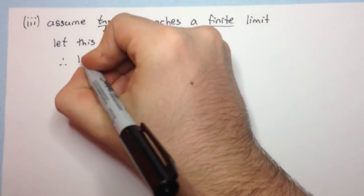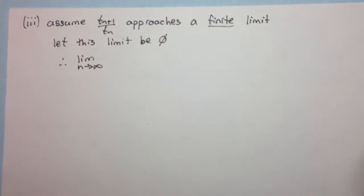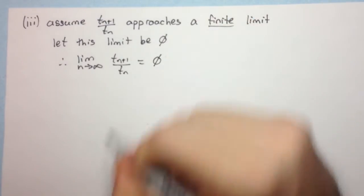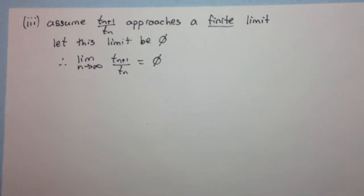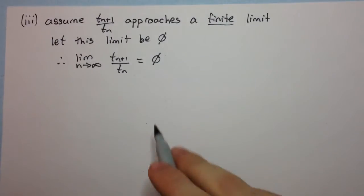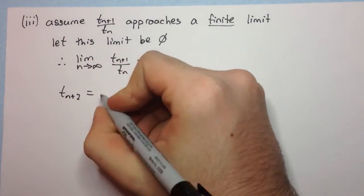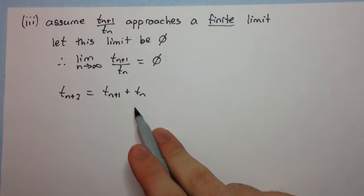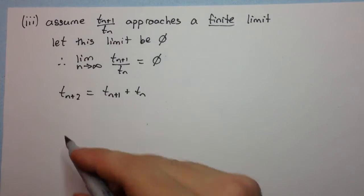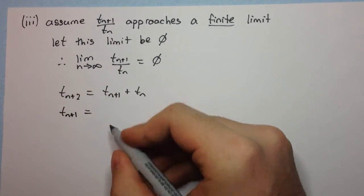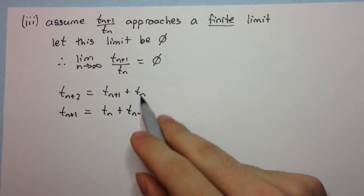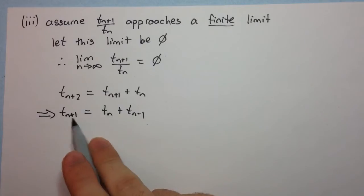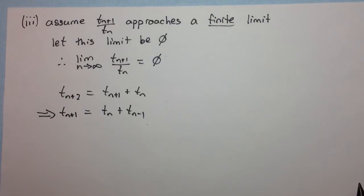So we're putting what we have into a mathematical sentence: the limit as n approaches infinity of t(n+1) over t(n) is equal to phi. Now, we know from our definition of the Fibonacci sequence that t(n+2) = t(n+1) + t(n), meaning any term equals the sum of the previous two terms. This is exactly equivalent to saying t(n+1) = t(n) + t(n-1), which is the same thing — a term equals the one before it plus the one before that.